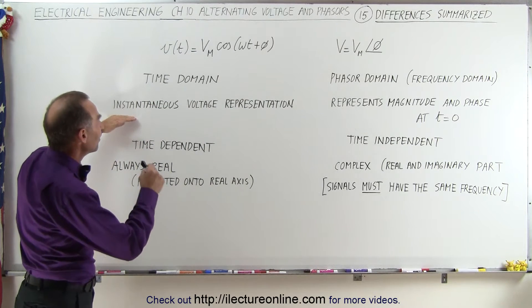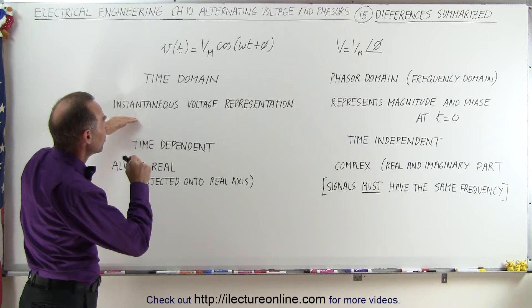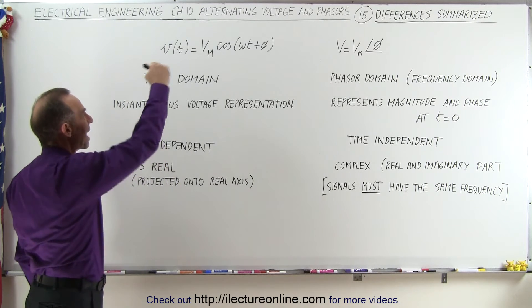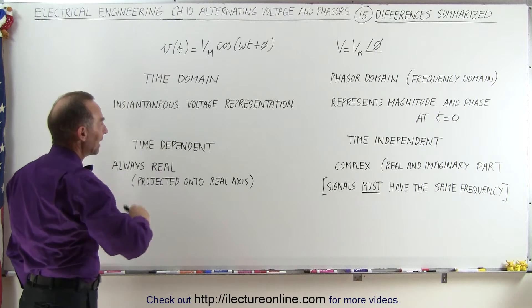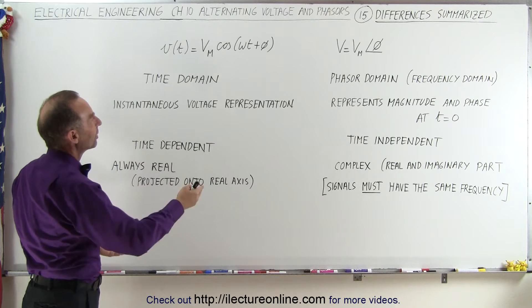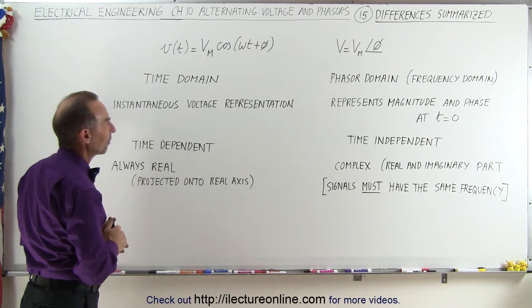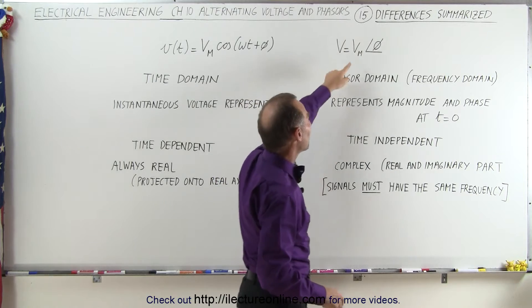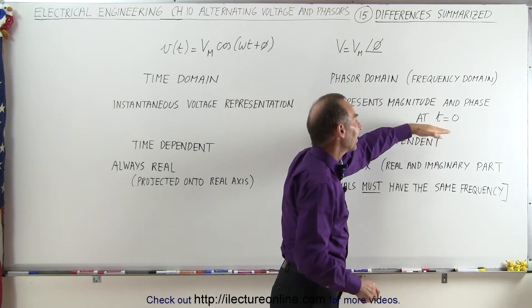This represents the instantaneous voltage at some moment in time. So this will take on various values between maximum Vm and minimum or negative Vm. It represents the voltage at any point in time with that function. And when we go to the phasor domain, it represents the magnitude and the phase at t equals zero.